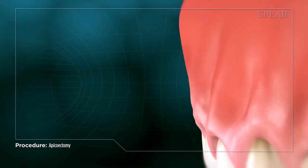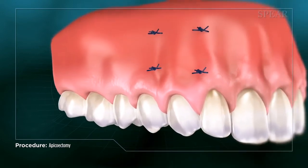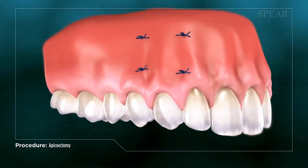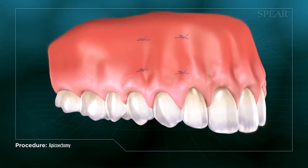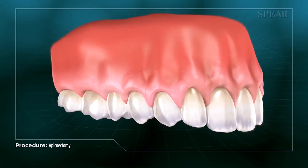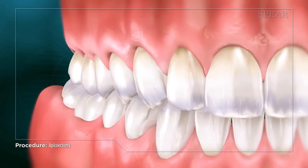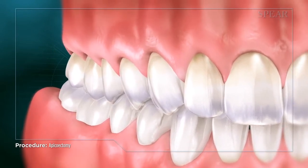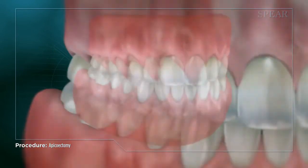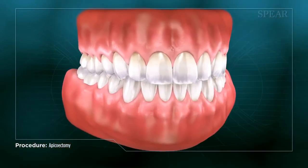Healing for an apicoectomy depends on the severity of the infection and can range from months to a year to fully heal. With the infection removed and the root resealed, the tooth has been saved and restored to its natural function.